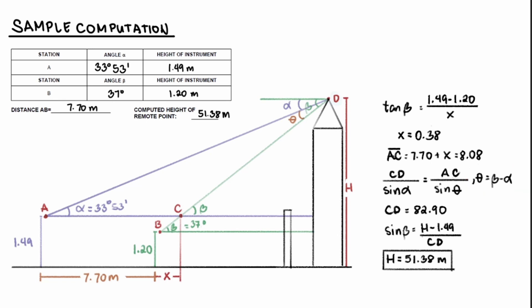So knowing this, we can solve for CD, which is 82.90 meters. Now we have the length of side CD, which also happens to be the hypotenuse of this right triangle.